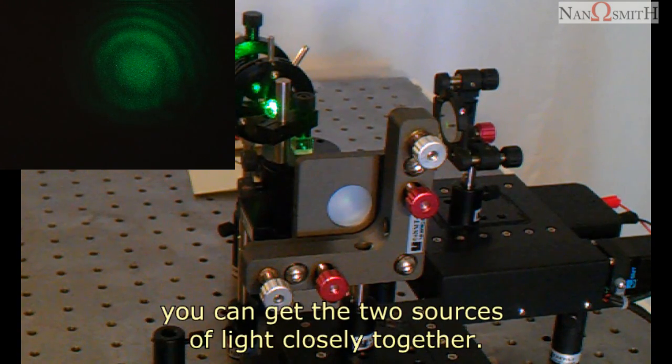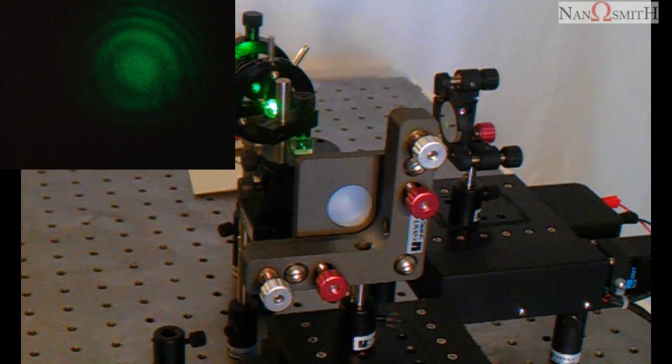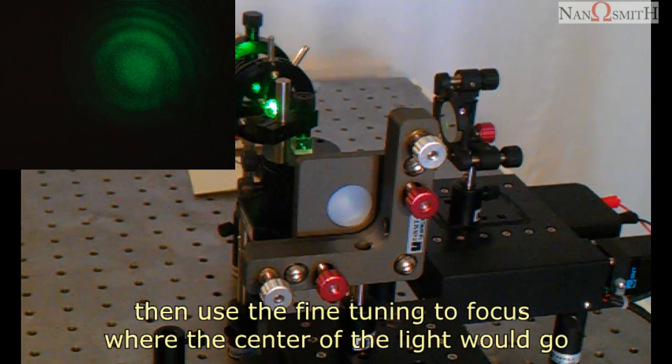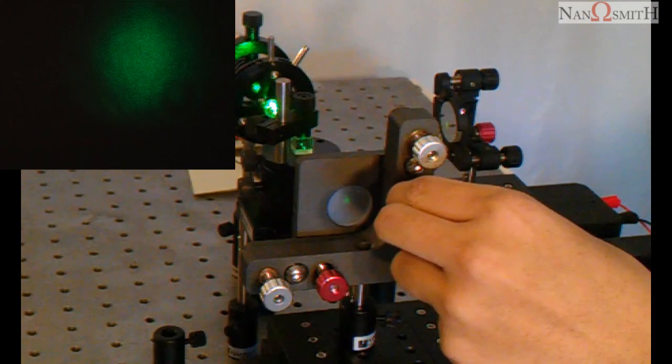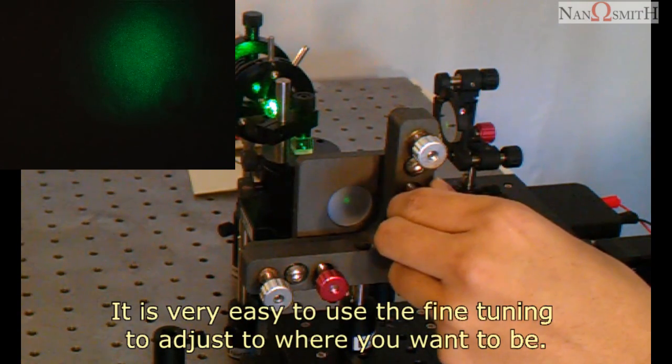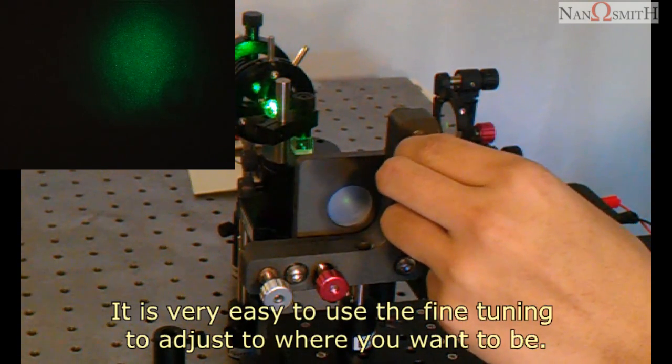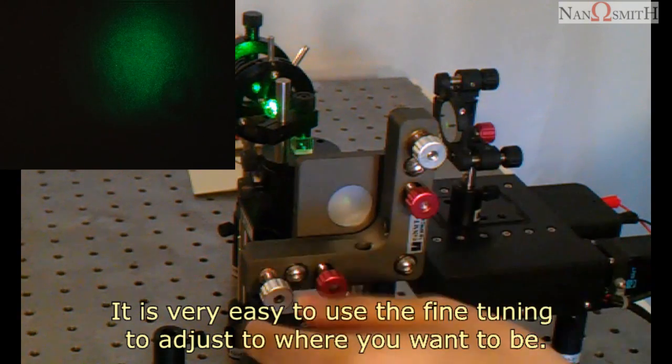You can get the two source of light closely together, then use the fine tuning to focus whether the light off center would go. Then again, it is very easy to use the fine tuning to adjust to where you want it to be.